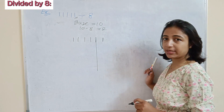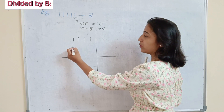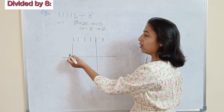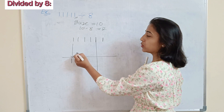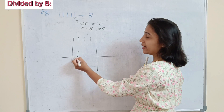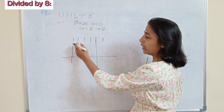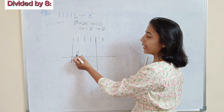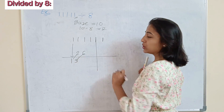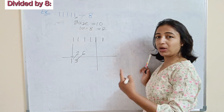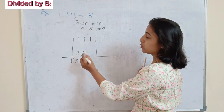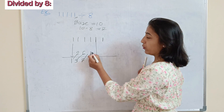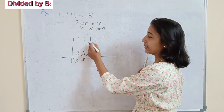In the first step you write the first number as it is, then add double of that number to the next digit. So the first digit is 1, double of 1 is 2, add to next: 1 plus 2 is 3. Double of 3 is 6, add to next: 6 plus 1 is 7.